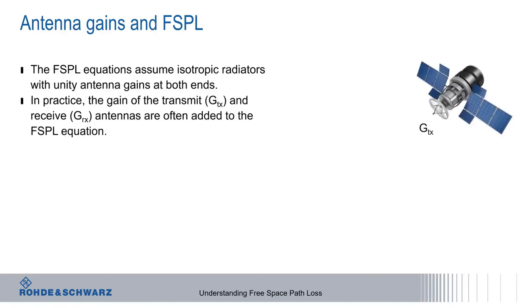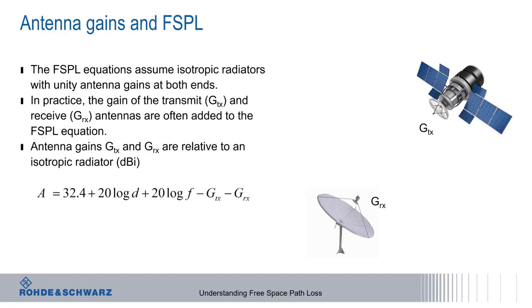In this case, G-sub-Tx and G-sub-Rx, these gains being defined relative to an isotropic radiator. In this case, the free space path loss equation now becomes A equals 32.4 plus 20 log D plus 20 log F minus G-Tx minus G-Rx.